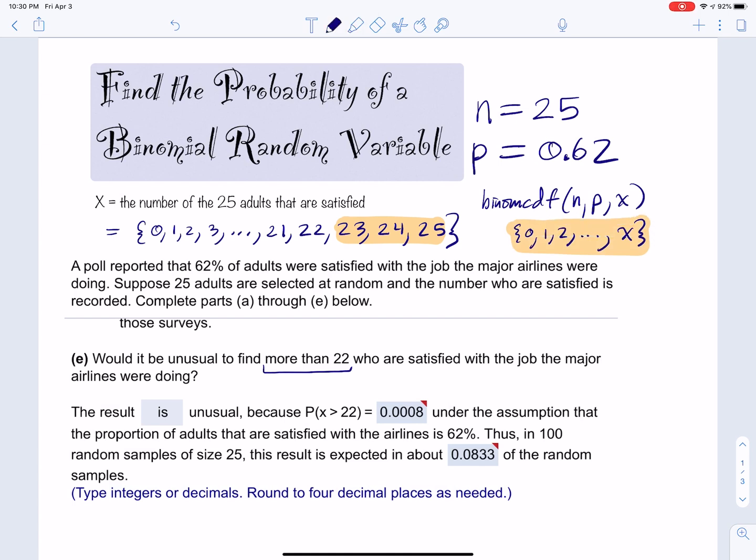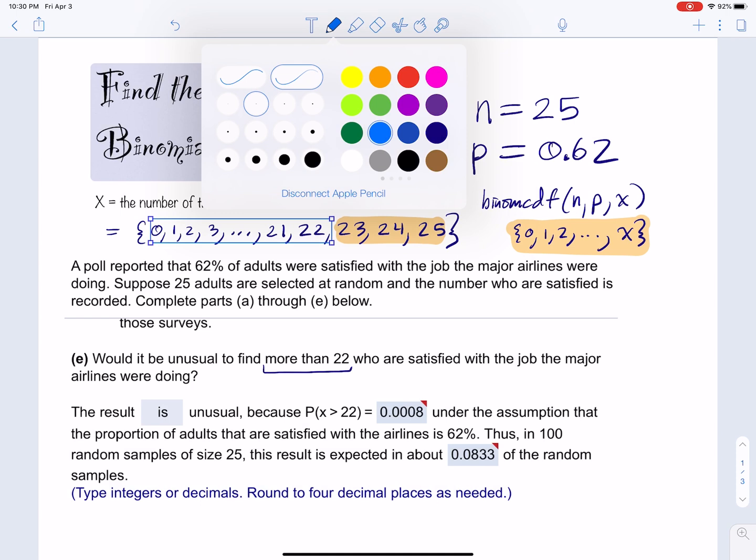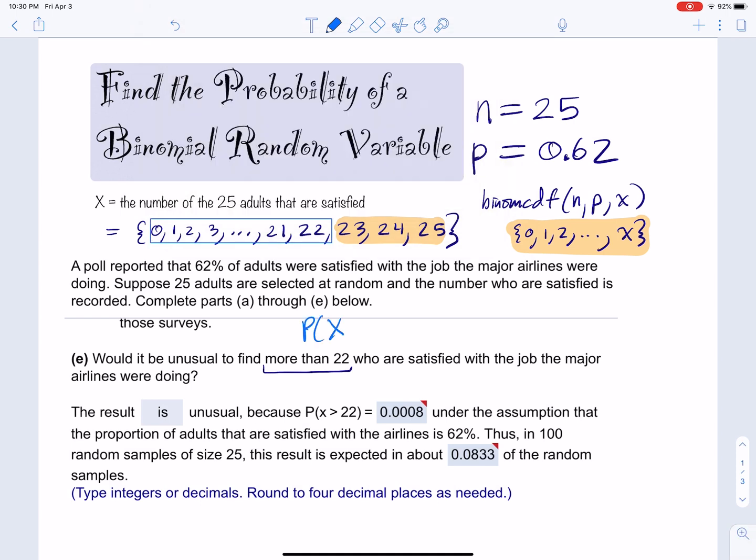It's cumulative. So we have to use the complement idea. So we're going to take these values here. From 0 to 22, we need to realize that that is the complement of what we're trying to find. So therefore, the probability that X is greater than 22 is what we're trying to find.